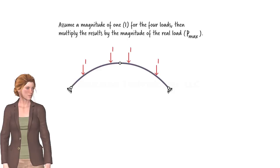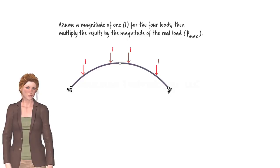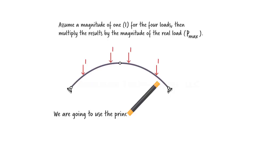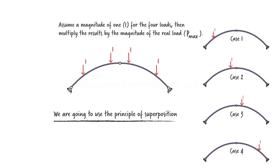It is important to note that all four loads may not have to be present at the same time for the maximum moment to develop. In fact, as you will see in a minute, the maximum positive moment develops when only one of the posts is loaded. And for the maximum negative moment, we only need three of the four posts to be loaded. To figure out the locations and magnitudes of the critical moments, we are going to use the principle of superposition. Let's start by analyzing the arch under these four separate loading cases, then find the maximum moment values by combining the results from the individual cases.